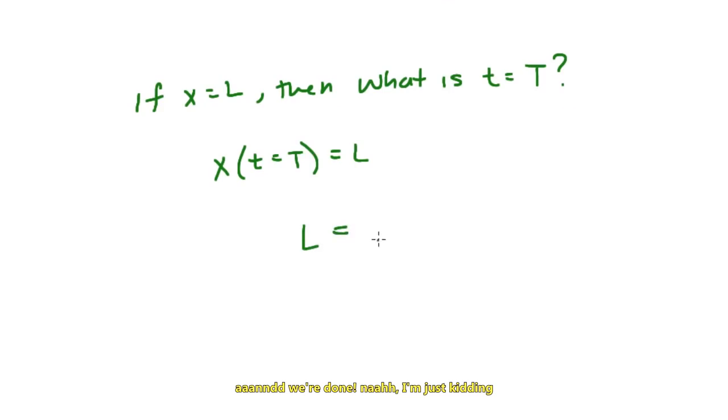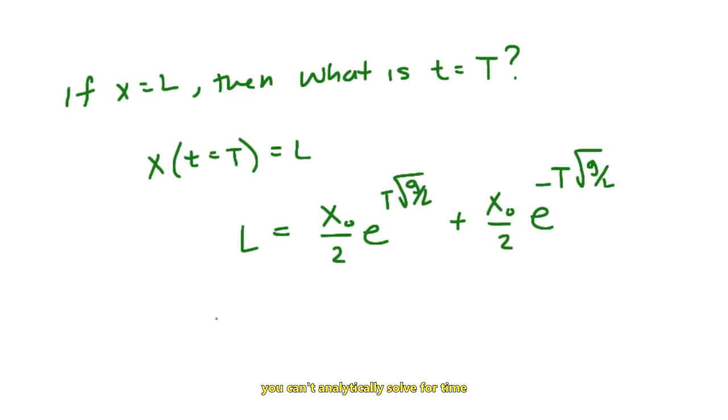And we're done. Nah, I'm just kidding. If we try to solve for the time it takes for the rope to slide off the table, then there is a problem. You can't analytically solve for time.